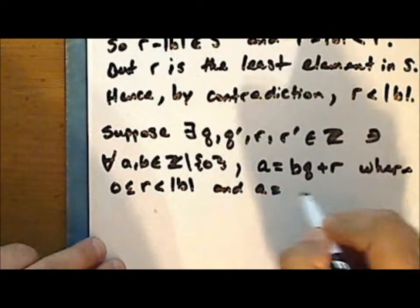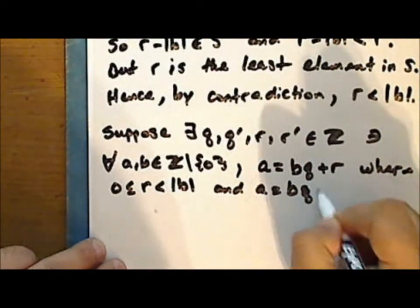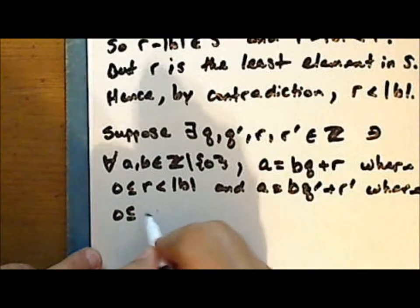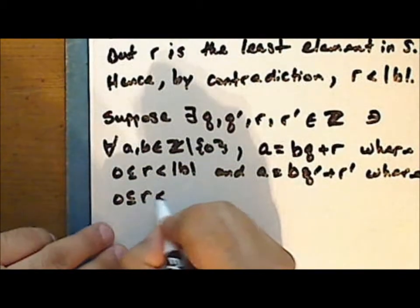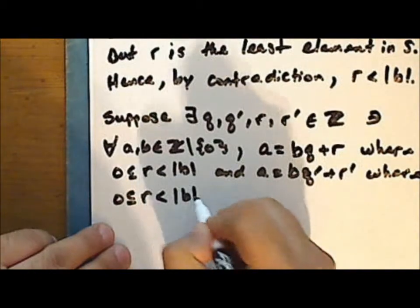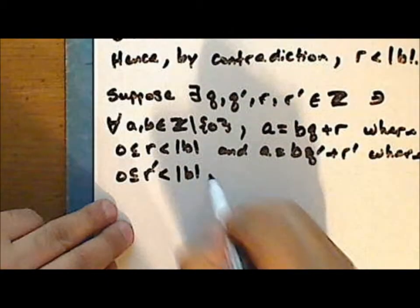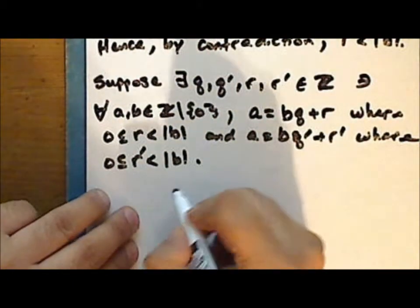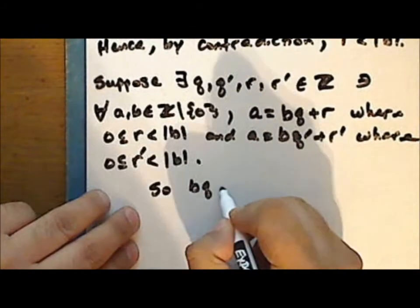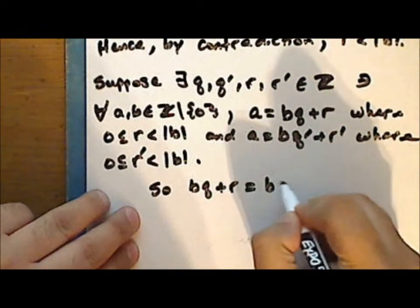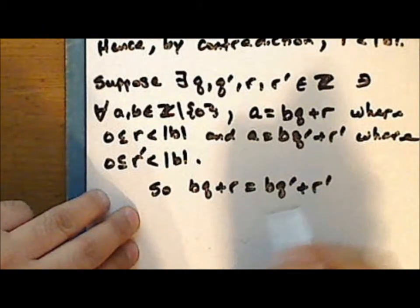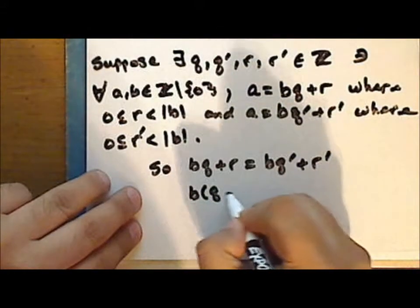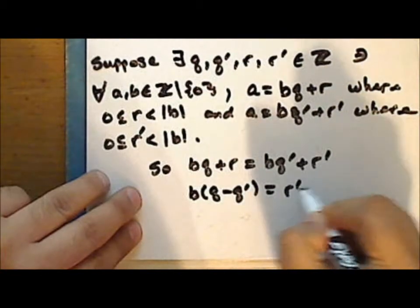And a can also be represented as b times q prime plus r prime, where r prime is greater than or equal to zero but strictly less than the absolute value of b. So we have two representations of the integer a, meaning b times q plus r equals b times q prime plus r prime. Grouping like terms, we get b times (q minus q prime) equals r prime minus r.